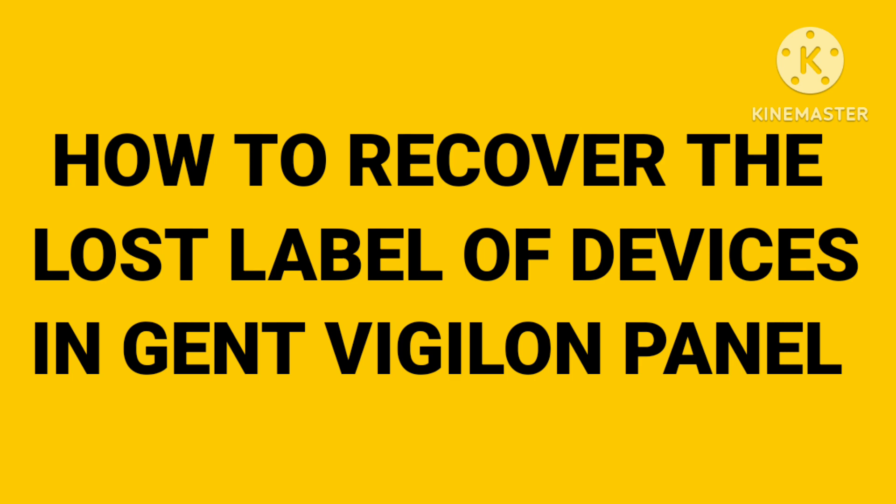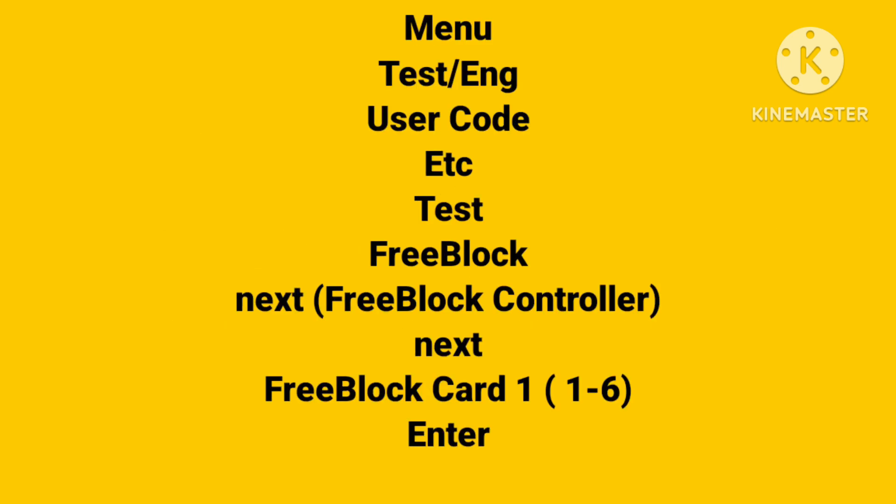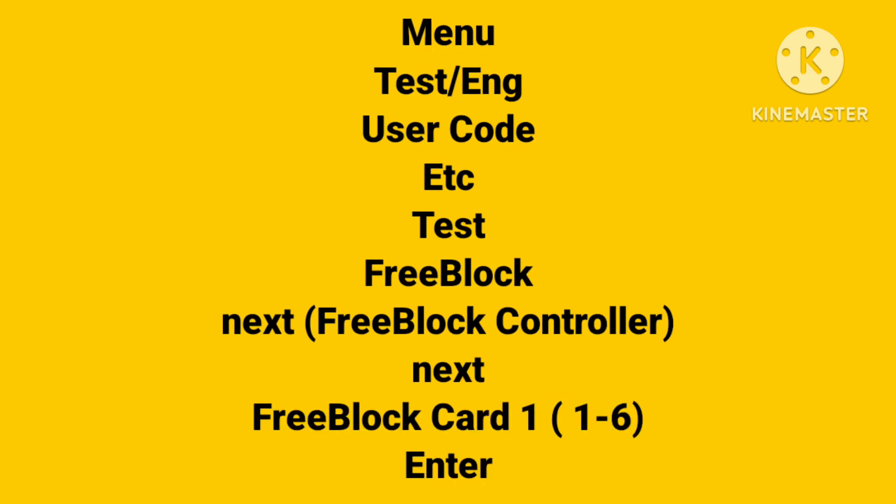To recover the label of the devices, you will go first to: Menu → Testing → User Code → Test → Free Block → Next → Next. You will find the Free Block and Card, and you will enter the required card number of which you have to recover the devices, then press Enter.